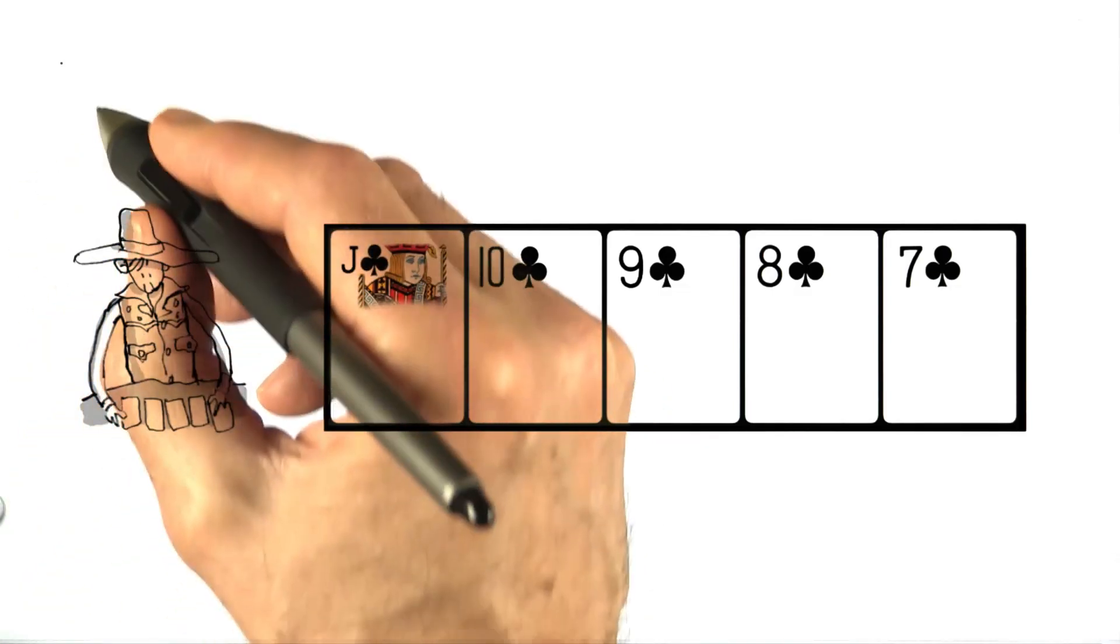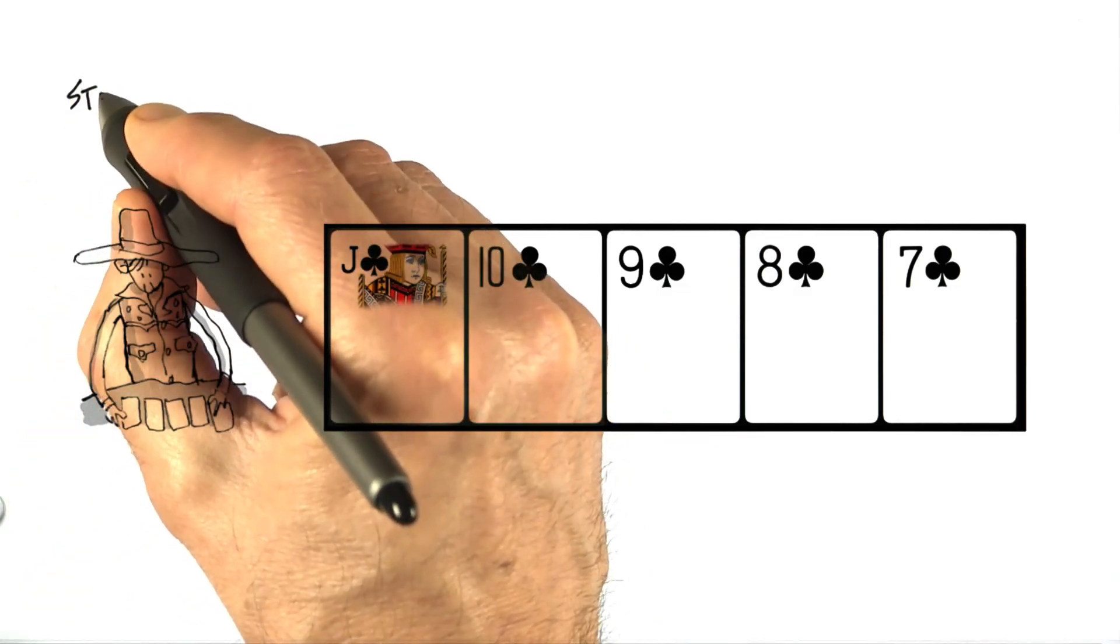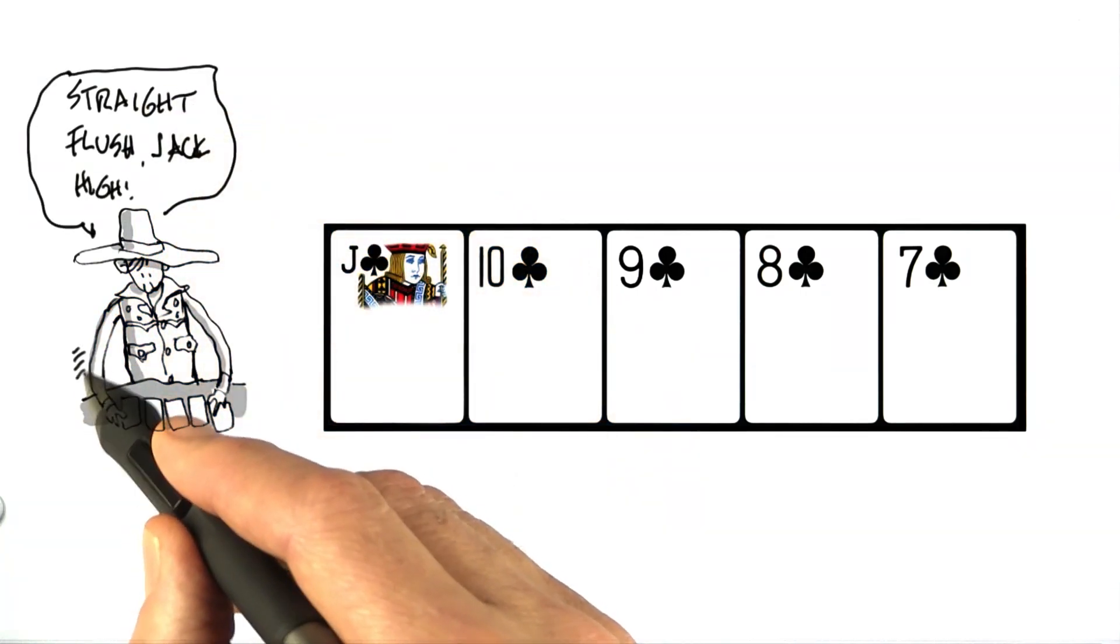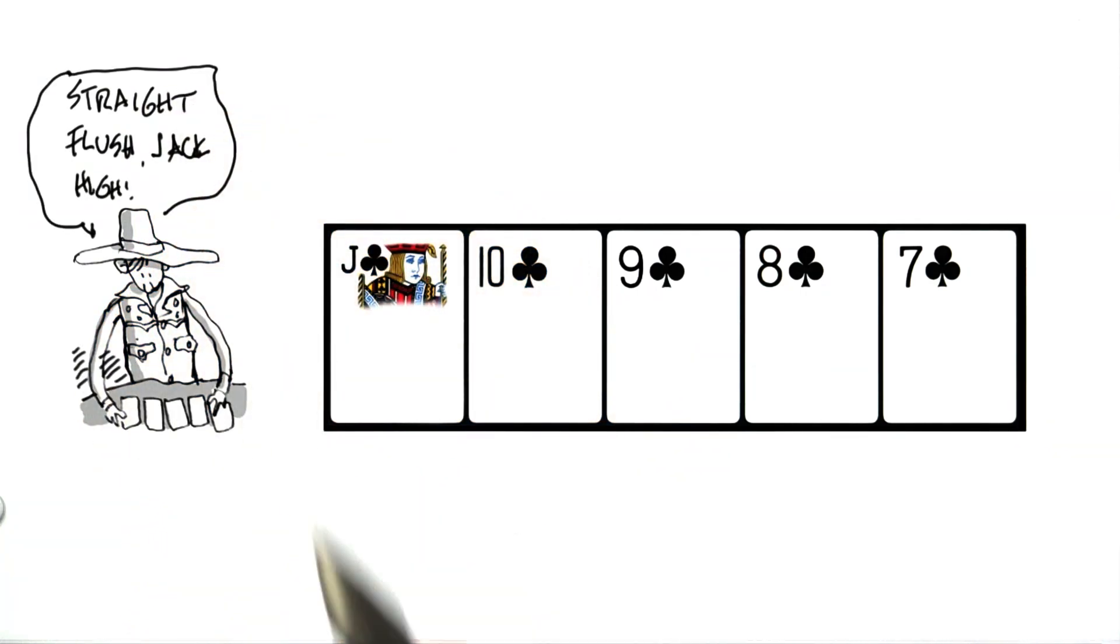We can understand the ranking that we're going to assign to this hand by the way a poker player would call out his hand when asked to reveal it. Our player declares straight flush, jack high.